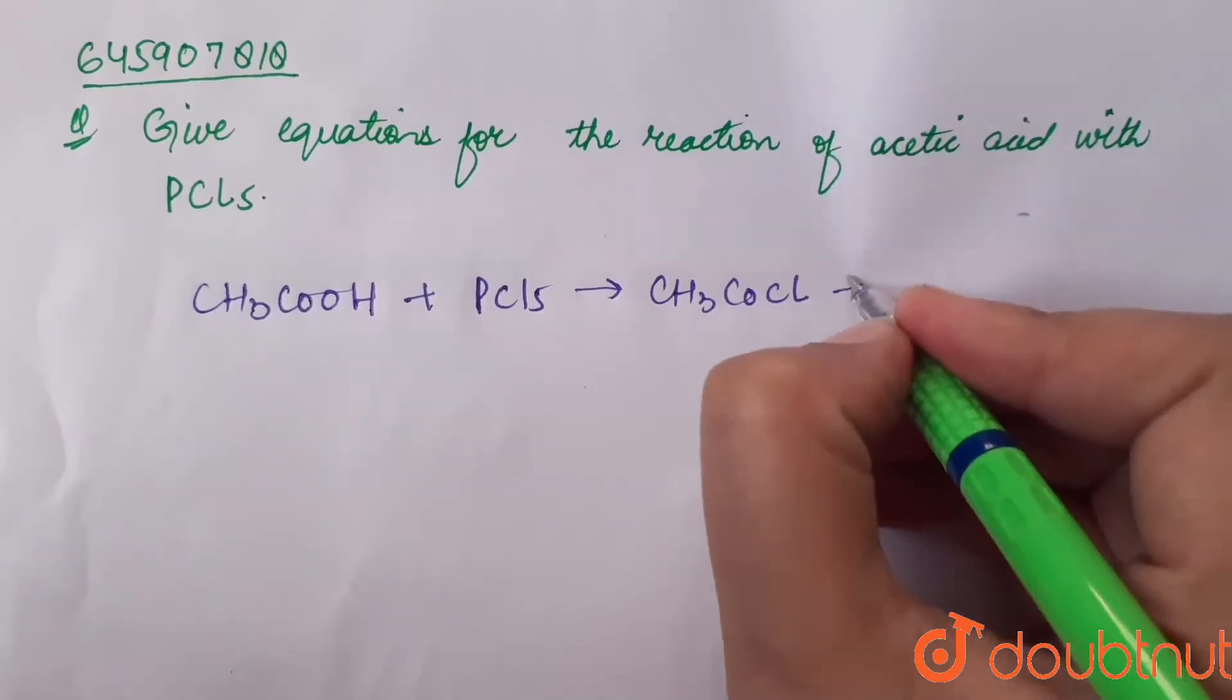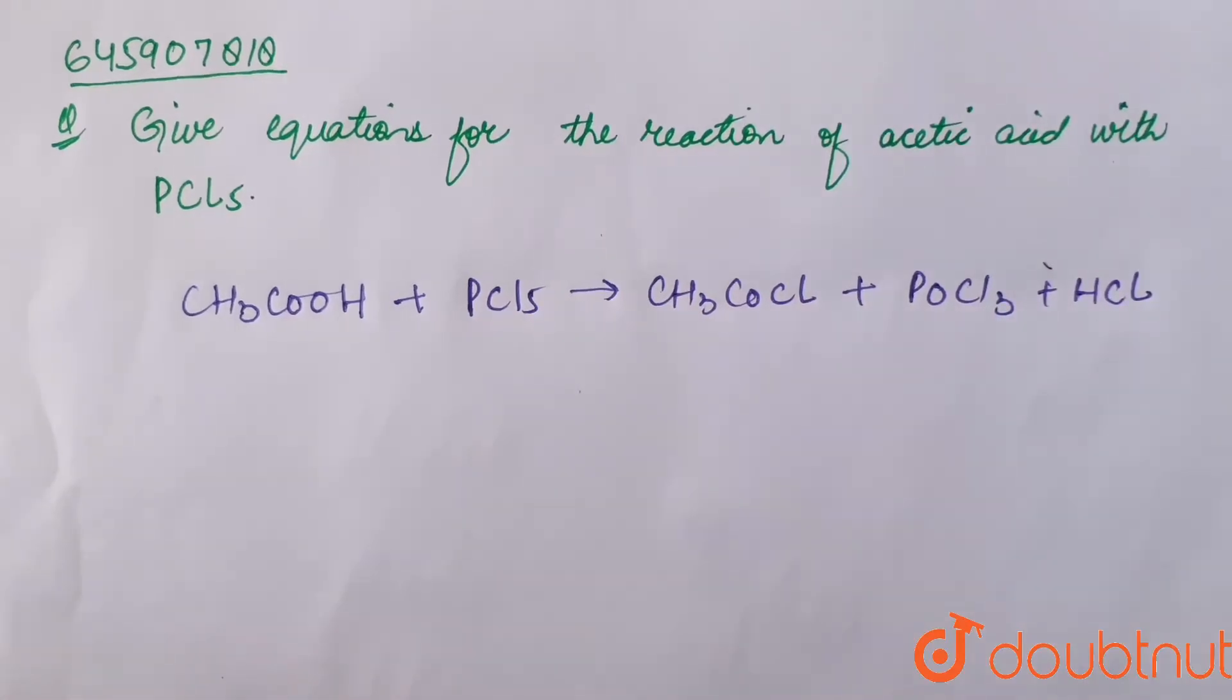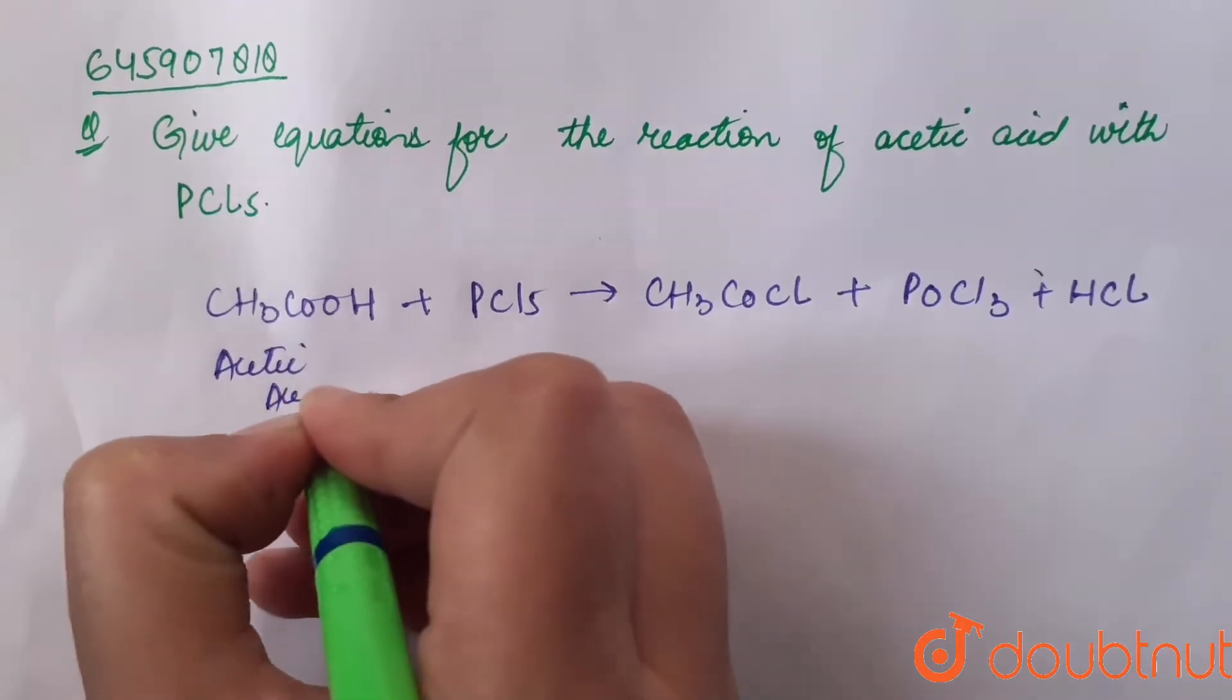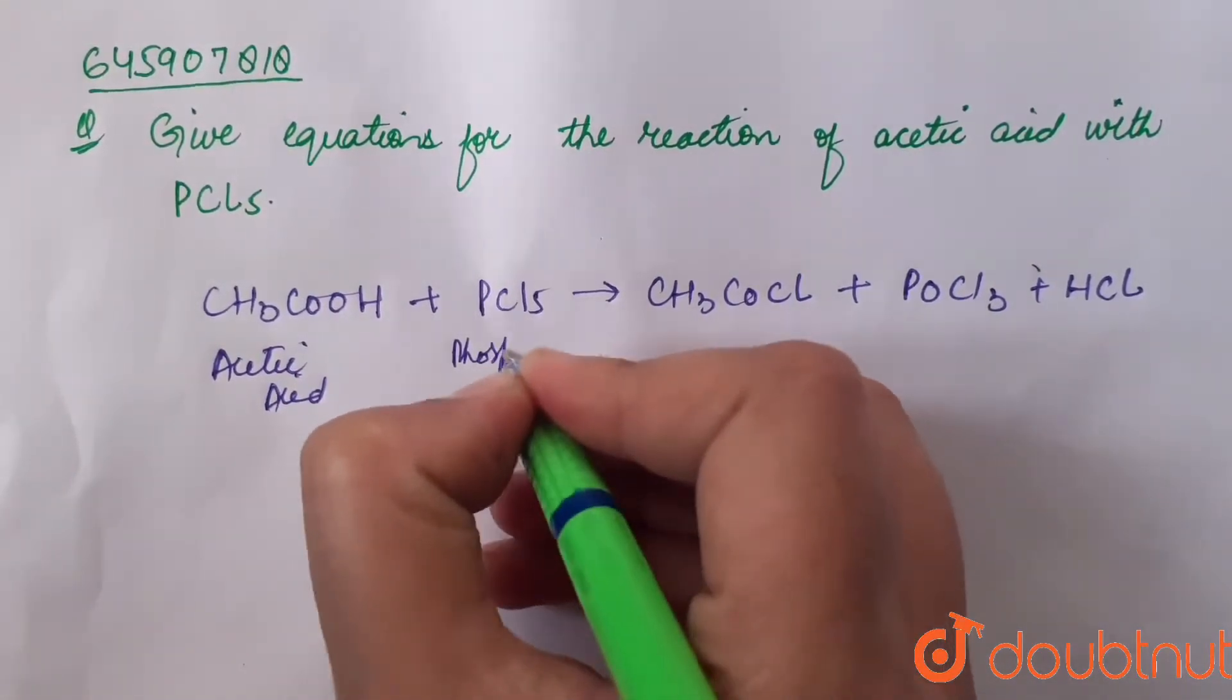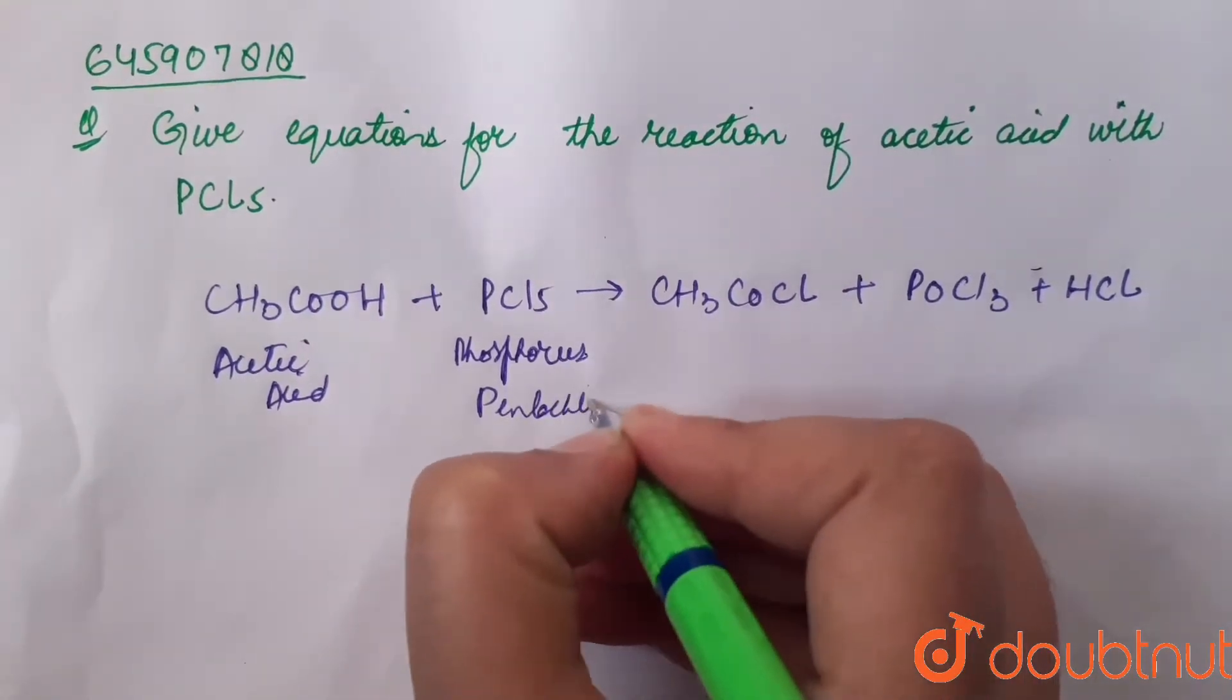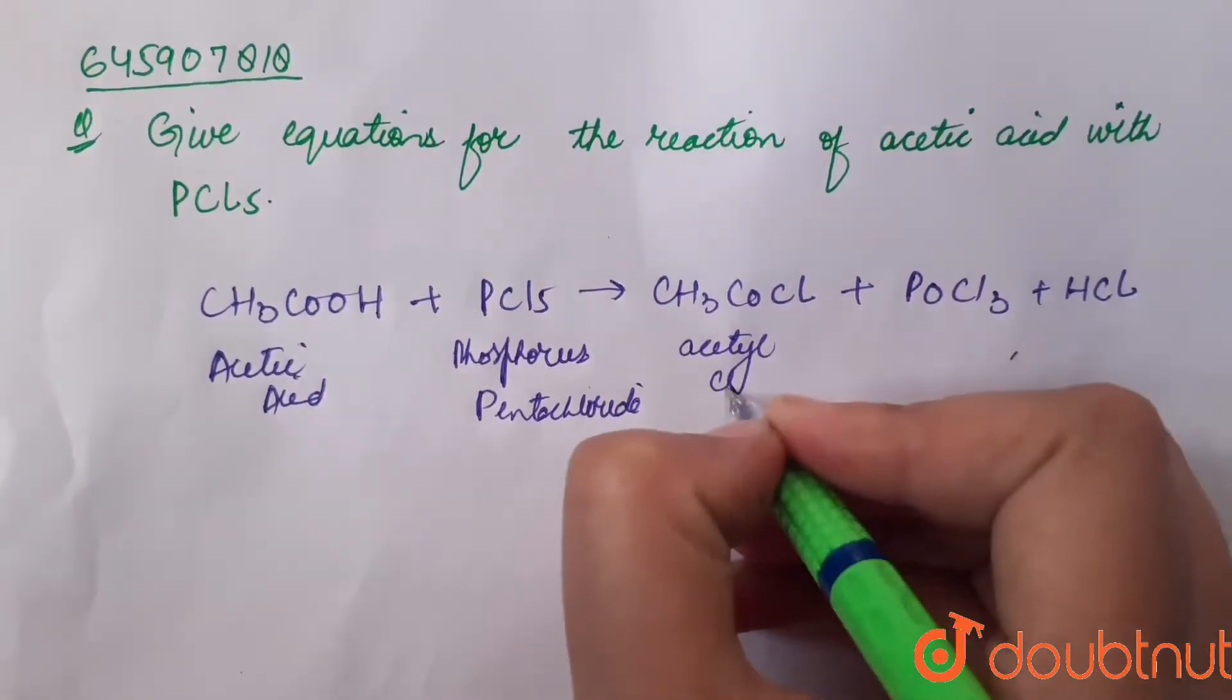Along with POCl3 and HCl. Hence, when acetic acid reacts with phosphorus pentachloride, acetyl chloride is obtained.